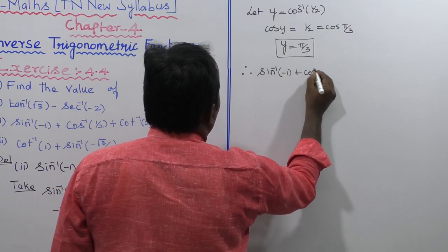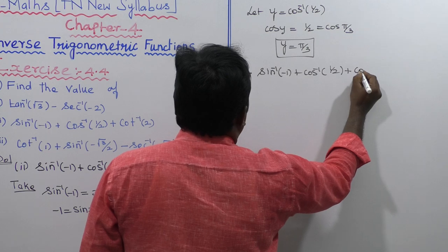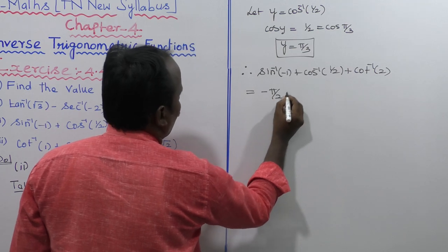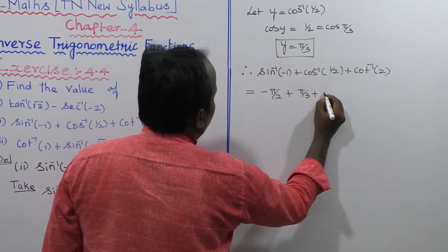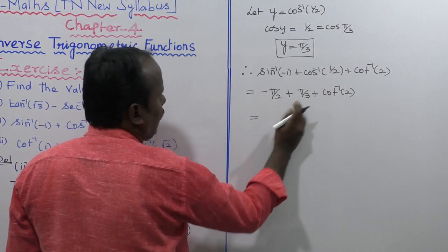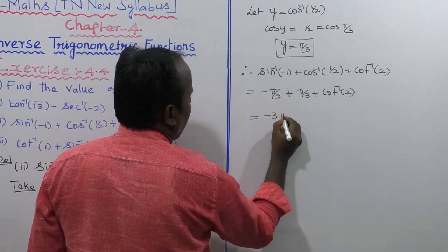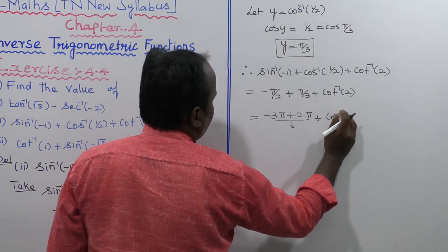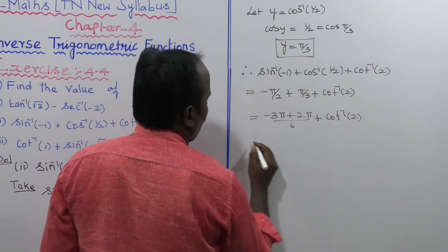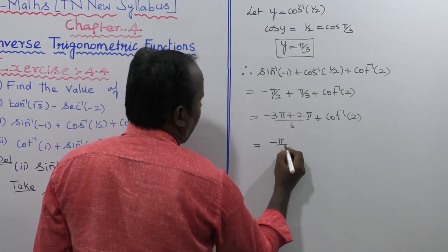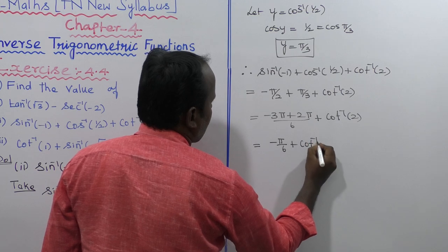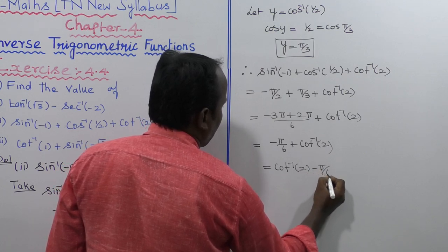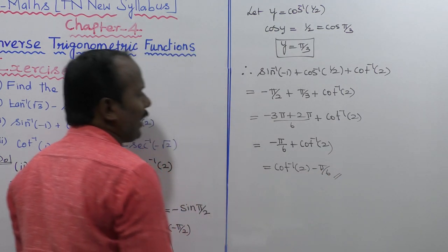Therefore, sin inverse of minus 1 plus cos inverse of 1 by 2 plus cot inverse of 2 equals minus pi by 2 plus pi by 3 plus cot inverse of 2. By cross multiplication: minus 3 pi plus 2 pi all divided by 6 gives minus pi by 6. So the answer is cot inverse of 2 minus pi by 6. That is the answer of the second subdivision.